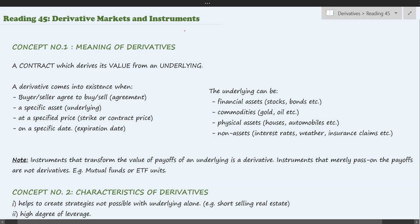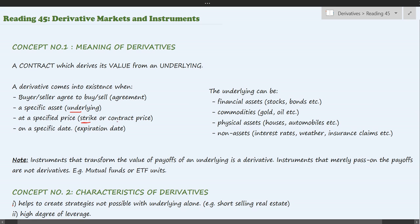Let us start with Reading 45: Derivative Markets and Instruments. Concept number one: meaning of derivatives. A derivative is a contract which derives its value from an underlying. It is an agreement to buy or sell an underlying asset at a specified price — also called the strike price or contract price — someday in the future, which is the expiration date.